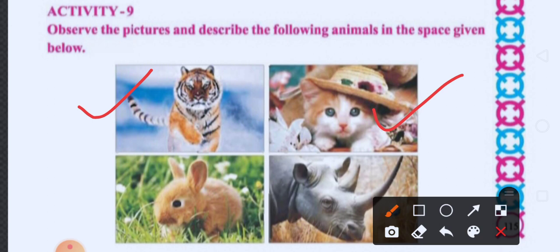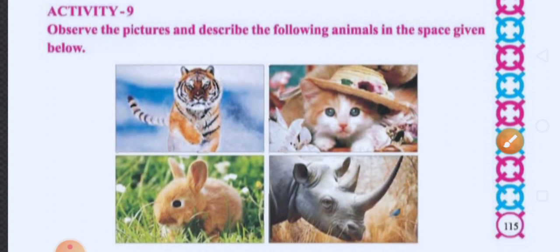This is a picture of a cat. And what is this? This is a rabbit. And which animal is this? आपने देखा है कभी? ये कौन सा animal है? Rhinosaurs. Now, we have to write about all four animals in detail.